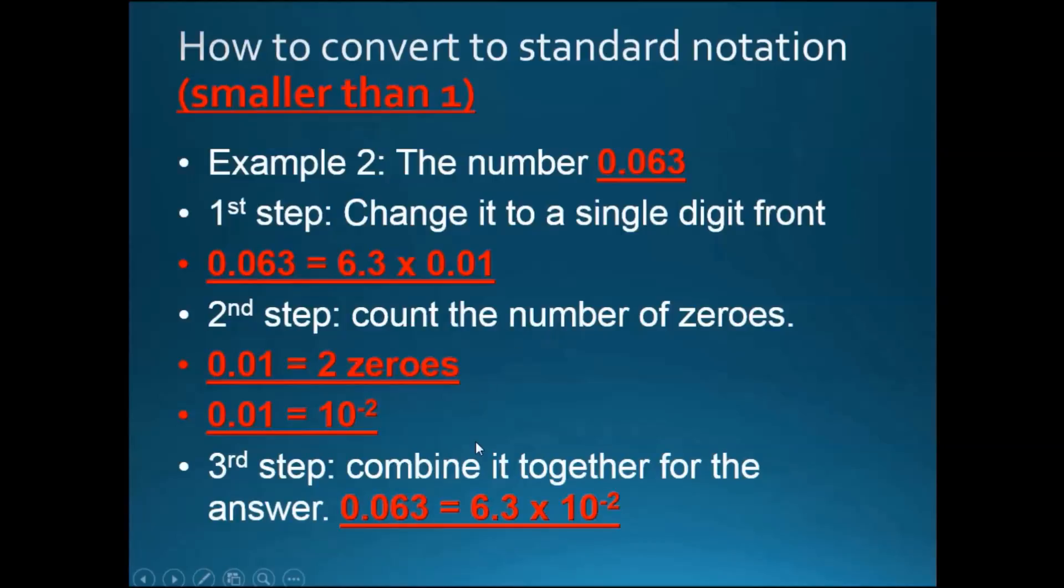Now the third step is we can combine it together for the final answer, which is 0.063 equals 6.3 times 10 to the power of minus 2.